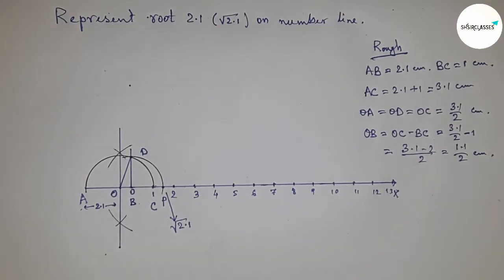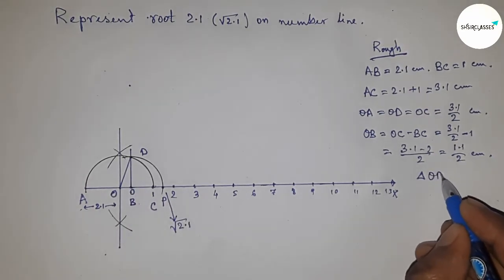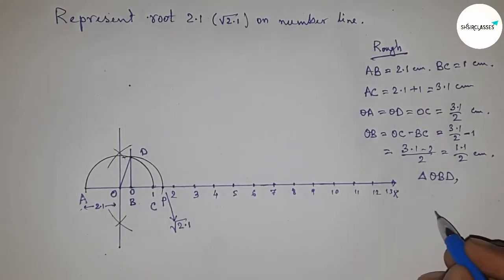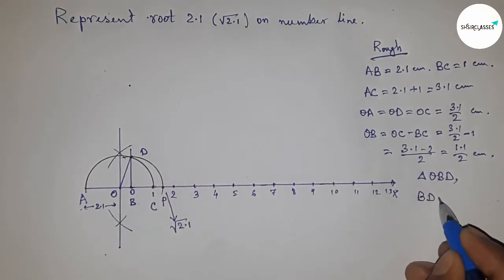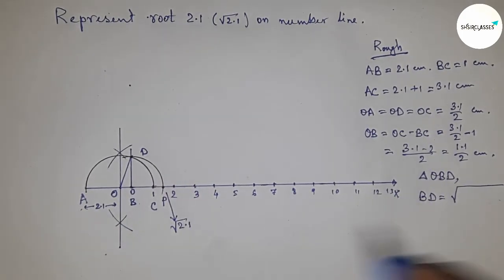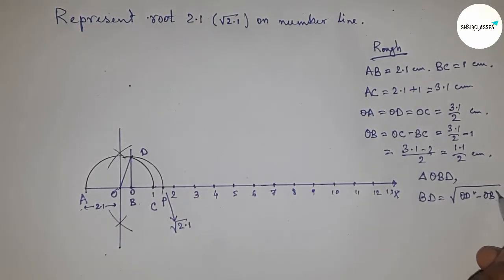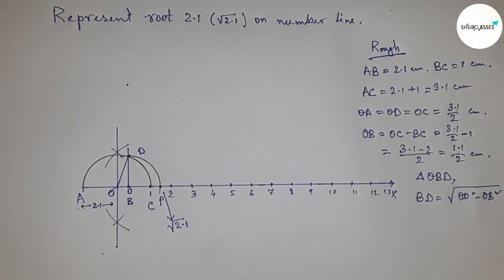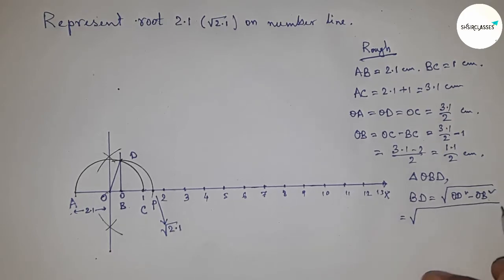In right triangle OBD, we can find the height BD using the Pythagorean theorem: BD equals the square root of hypotenuse squared minus base squared. Putting the values: OD equals 3.1 by 2, so BD equals square root of (3.1/2)² minus (1.1/2)².